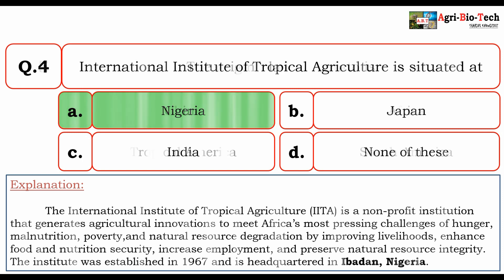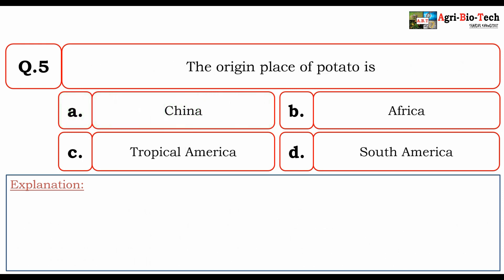Next question: The origin place of potato is? A. China, B. Africa, C. Tropical America, and D. South America.